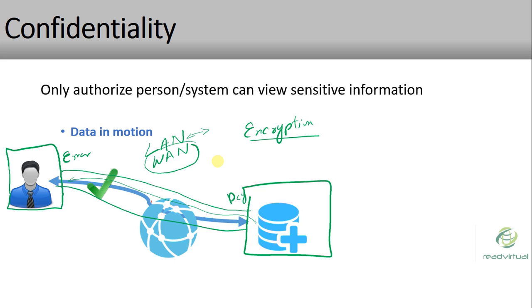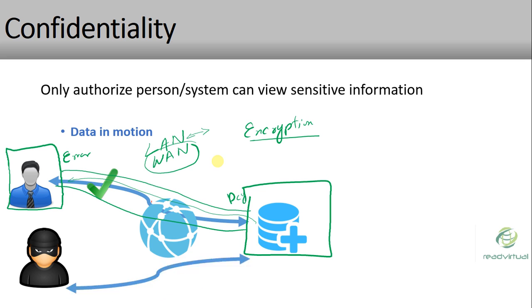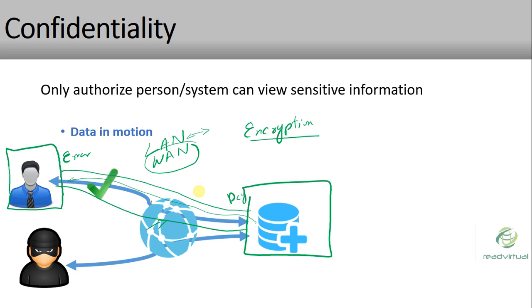If an unauthorized or malicious user enters the network, they will not have access because even if they can see the data, it is not readable — it is encrypted. We should always use strong encryption algorithms. So when an unauthorized user tries to access the data, it is properly encrypted and they will not be able to read it. Encryption gives us the security level we need over the network.